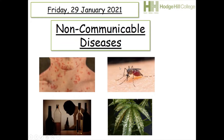This lesson is about non-communicable diseases. We're going to look at four images that represent four types of diseases. We've got measles in the top left, malaria on the top right, liver damage on the bottom left caused by excessive alcohol consumption, and on the bottom right we've got tobacco mosaic virus.